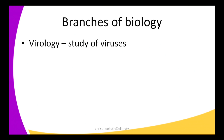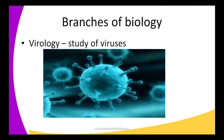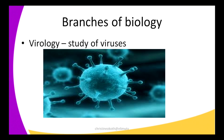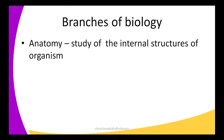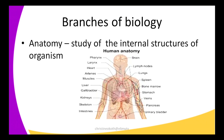The next branch of biology is virology — this is basically the study of viruses in organisms, both plants and animals. The most commonly known virus affecting our society is HIV, so we study how HIV spreads and what we can do to curb its spread. Such things are studied under virology.